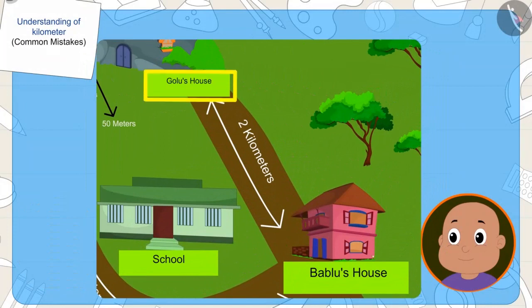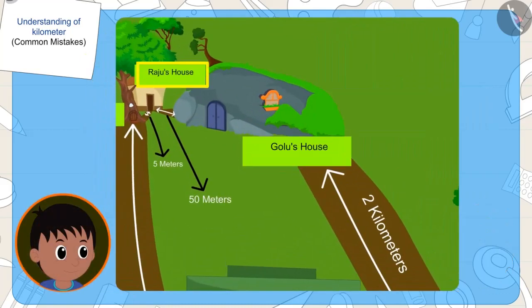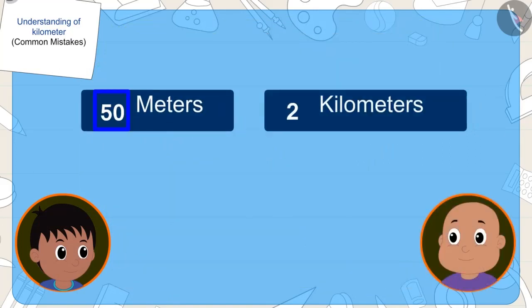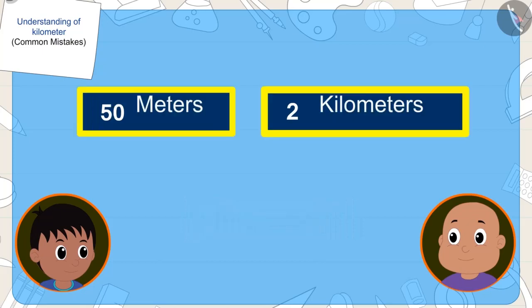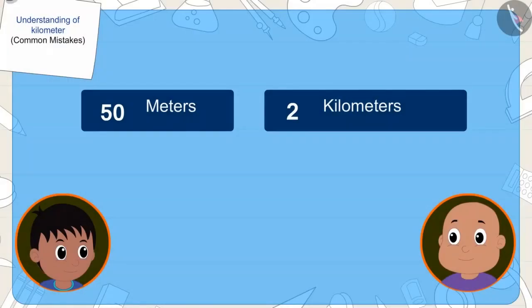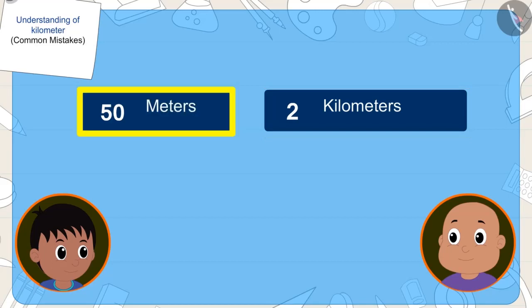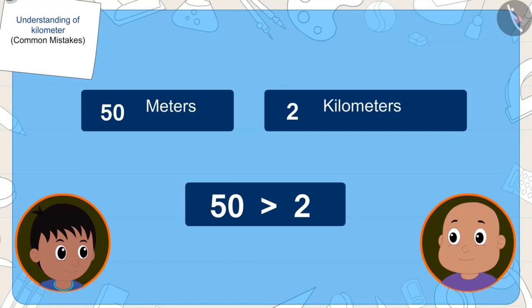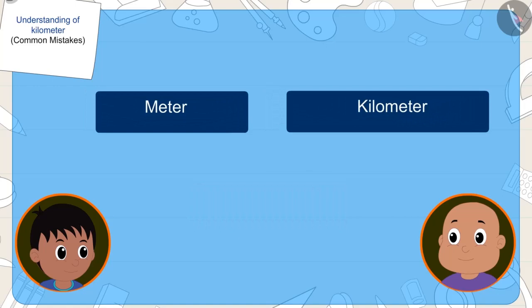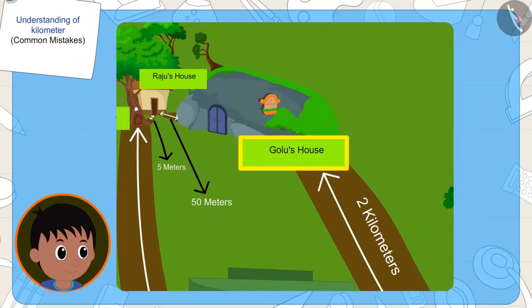This time, the number in the distance from Golu's house to Babalu's house, 2, is lesser than the number in the distances from Golu's house to Raju's house, i.e., 50. But once again, Babalu did not pay attention to their units when comparing the distances. His house is 2 kilometers from Golu's house and Raju's house is 50 meters from Golu's house. Even though 2 is less than 50, but because the meter is smaller than kilometer, Raju's house is closer to Golu's house.